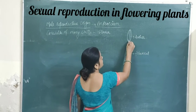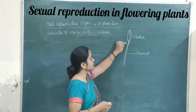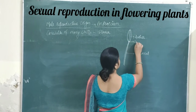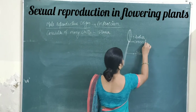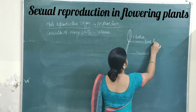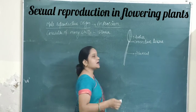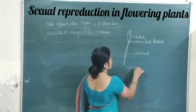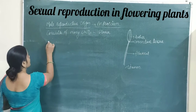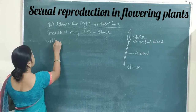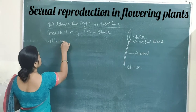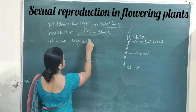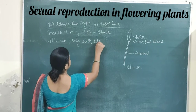Below the anther lobe where it joins the top part of the filament, there is a tissue which is named as the connective tissue. The different parts of the stamen are: first, the filament, which is a long stalk-like structure; and second, the anther, which is the swollen area consisting of spores in it.